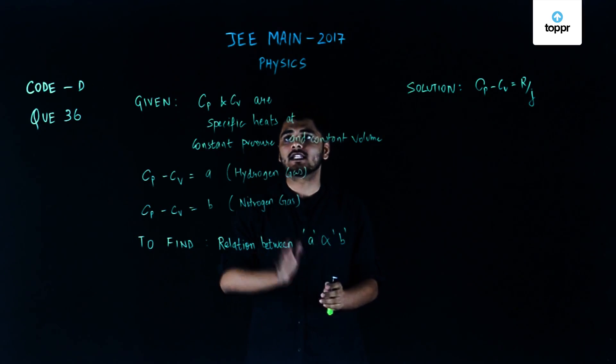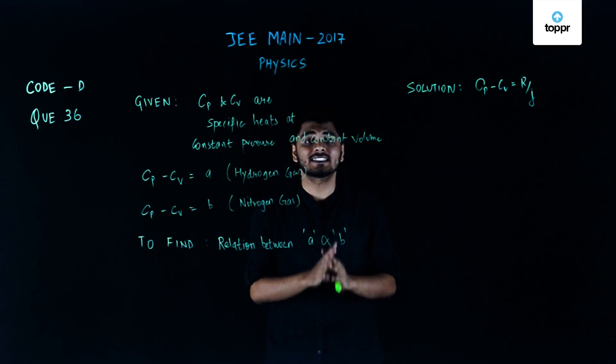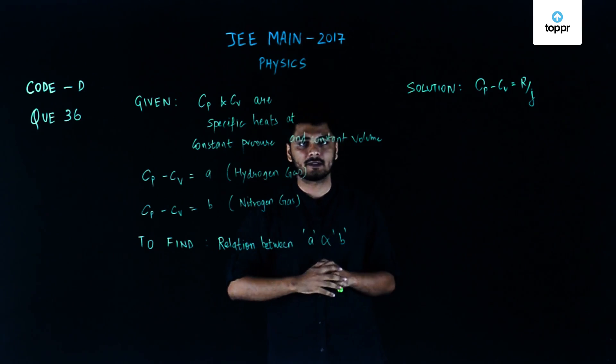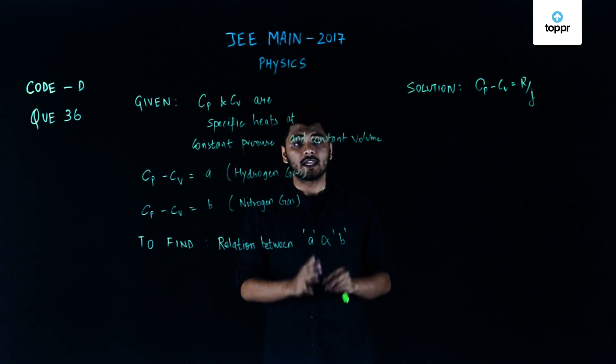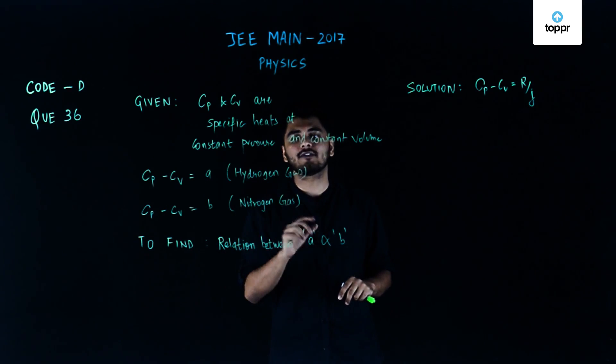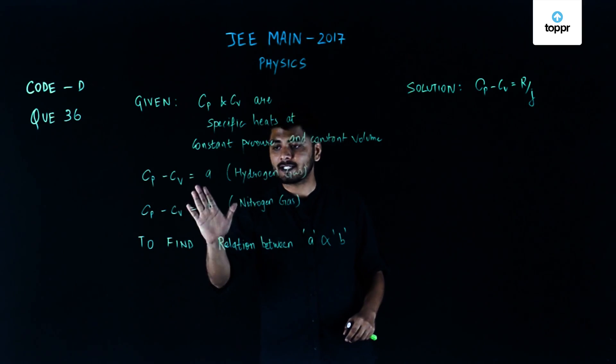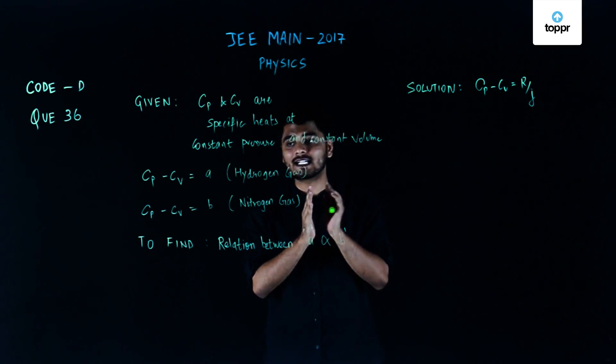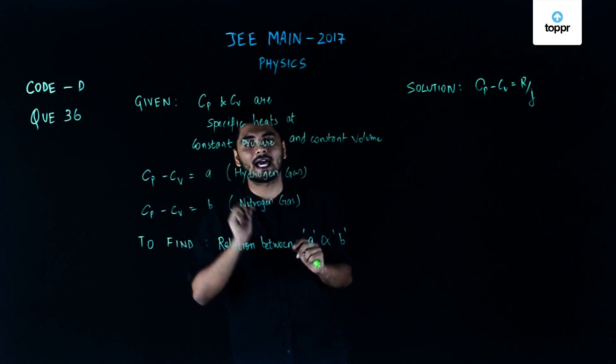In this question we have been given that Cp and Cv are the specific heats at constant pressure and constant volume respectively. Also, Cp minus Cv equals A for hydrogen gas and Cp minus Cv equals B for nitrogen gas. Now we have to find the correct relationship between A and B.